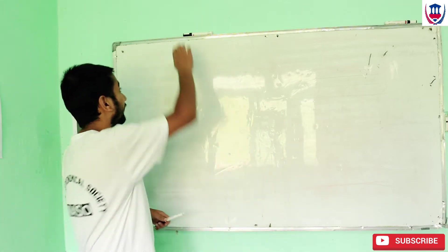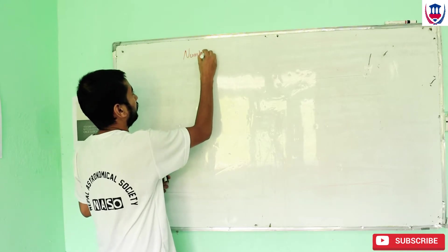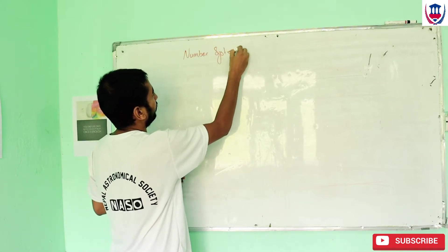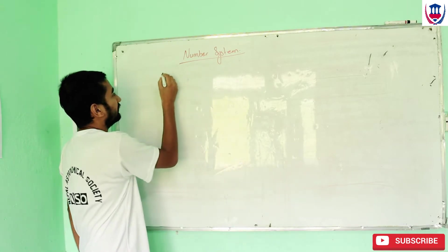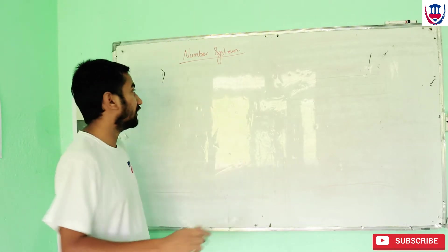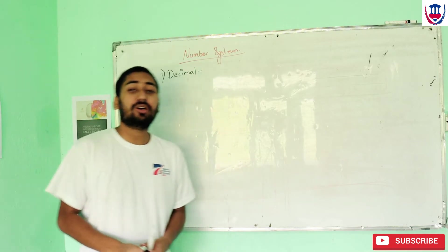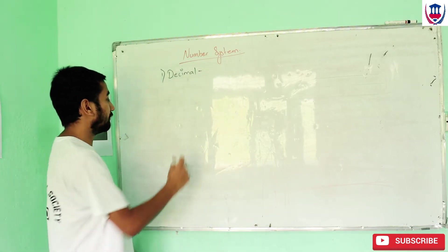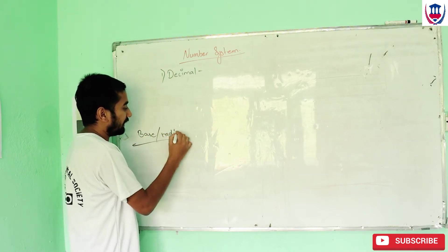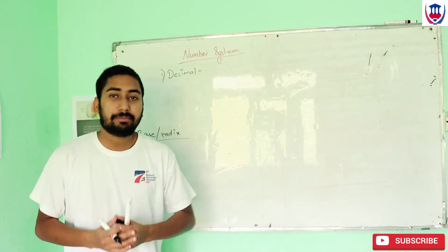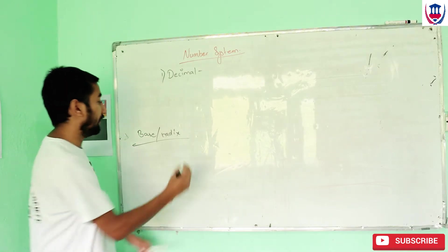So let's talk about the number system. The number system is used in computers. The first type of number system is called decimal, which is called the natural number system, including the digit 0. The decimal number system is used in different terms. The base is the different digits that are used to represent the number system.